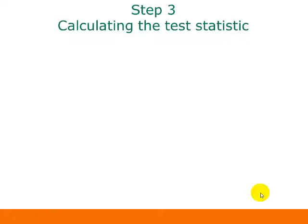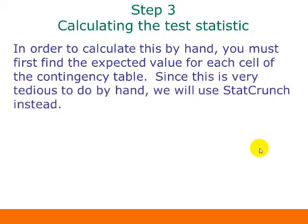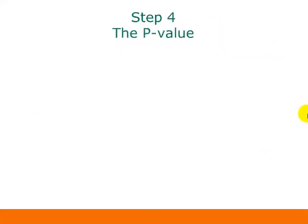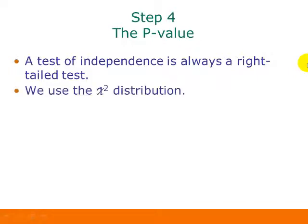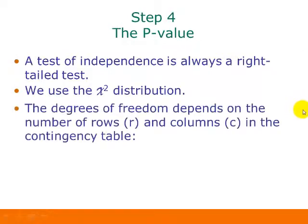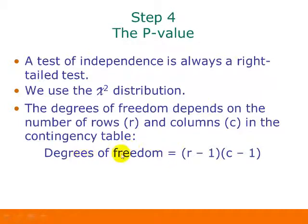Now we'll look at the other three steps of our hypothesis test. Calculating the test statistic by hand requires finding the expected value for each cell, which gets very tedious, so we'll use StatCrunch. For the p-value, a test of independence is always a right-tailed test using the chi-square distribution. The degrees of freedom depends on the number of rows R and columns C: degrees of freedom equals (R minus 1) times (C minus 1).